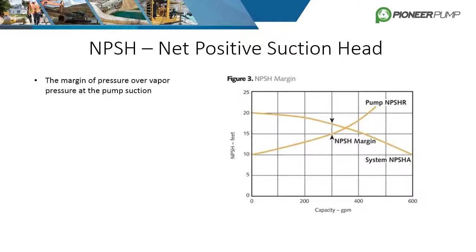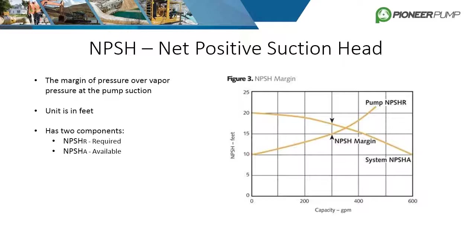NPSH, or net positive suction head, is the term used to describe the margin of pressure over the vapor pressure of the fluid at the pump suction. The units for NPSH are feet of head, and it has two components: NPSH required and NPSH available. For the pump to function properly, NPSHA needs to be greater than NPSHR. As long as NPSHA is greater than NPSHR, the pump will prime and avoid damaging cavitation.